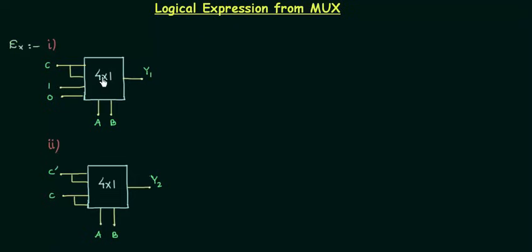Let's start directly from the first example in which you can see there is a 4x1 MUX, and there are definitely four inputs to it and two selector variables A and B.